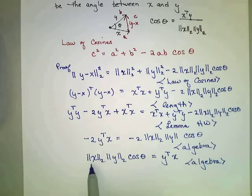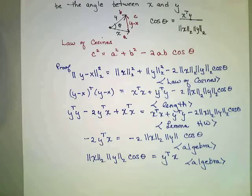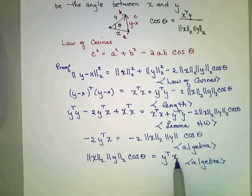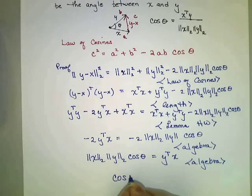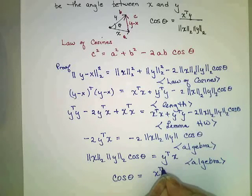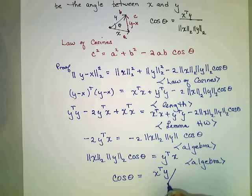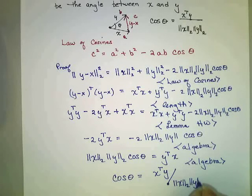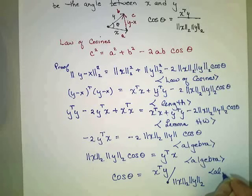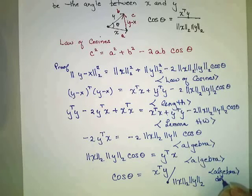But using some algebra and dividing both sides by the length, and also noticing that, if we recall, the dot product was commutative. So the dot product of y with x is equivalent to the dot product of x with y. We find that the cosine of theta must be x transpose y by commutativity of dot product divided by the length of x times the length of y. That was algebra and dot product being commutative.